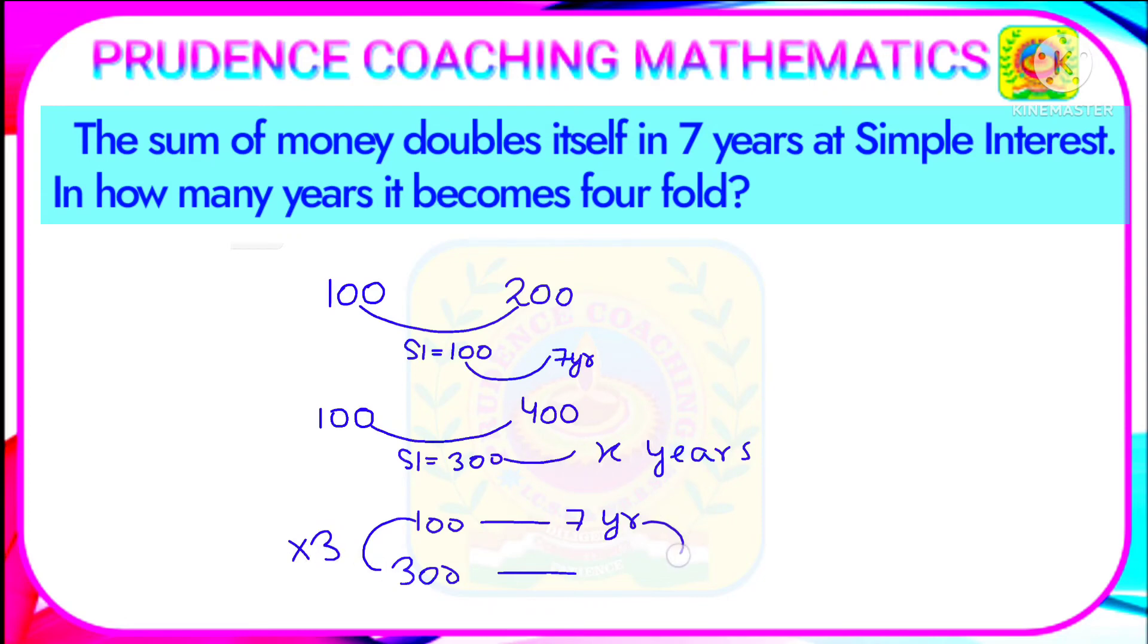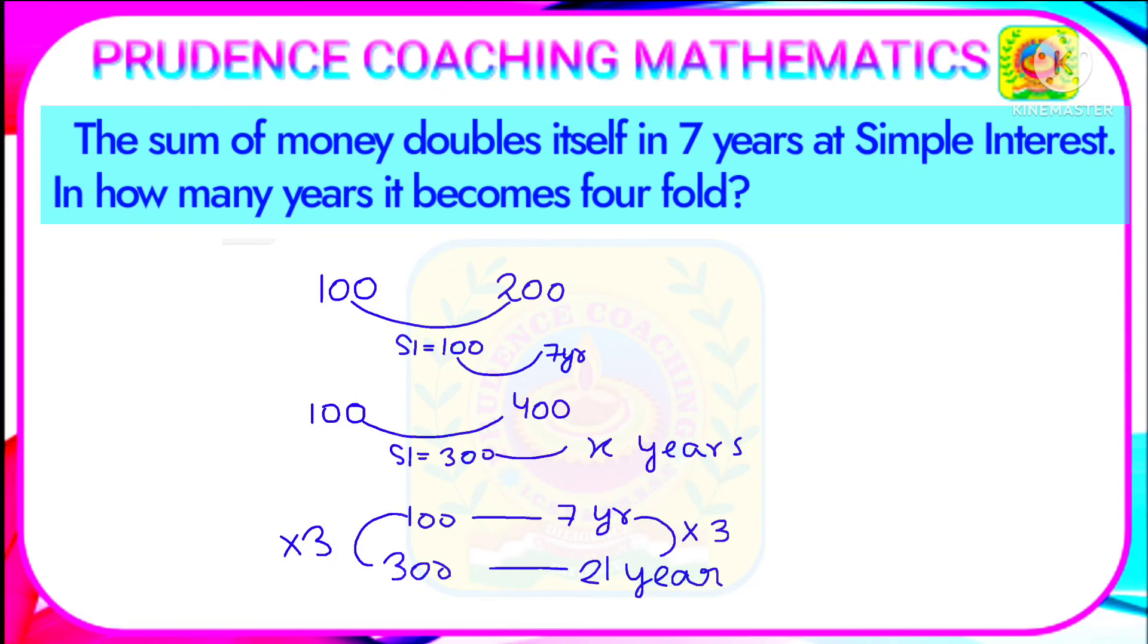So here also seven into three, that is twenty one years, because SI is same every year and as SI is becoming three times, so time will also be three times. So our final answer is twenty one years. Thank you.